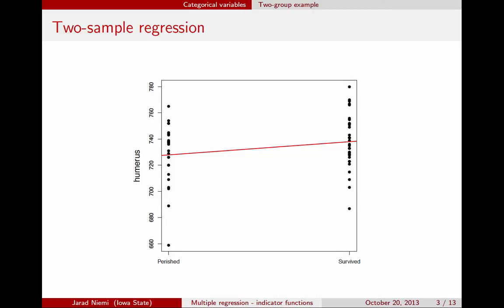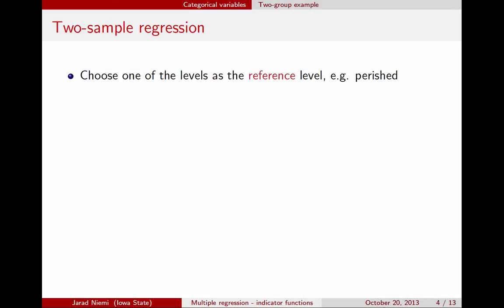So what does that mean? The idea is that if you have a categorical explanatory variable, the first thing you need to do is choose one of the levels of that explanatory variable to be the reference level. You'll see what that reference level means in a bit. In this case, we're going to choose perished to be our reference level. Recall that the two groups are perished and survived, so perished is going to be our reference level.